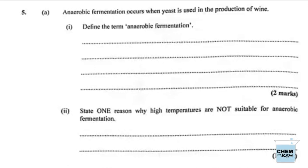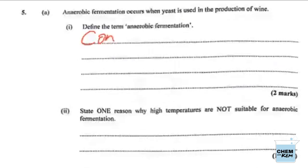Alright, so this is number 5, part 5A. Anaerobic fermentation occurs when yeast is used in the production of wine. Part 1: define the term anaerobic fermentation. So fermentation — we know once something ferments, it's forming an alcohol. And if they say anaerobic, we have to tell them what anaerobic means. Aerobic means air, and 'an' means without. So we're looking at the formation of alcohol in the absence of oxygen. So we could say it's the conversion of glucose to alcohol in the absence of oxygen — that will get us full marks.